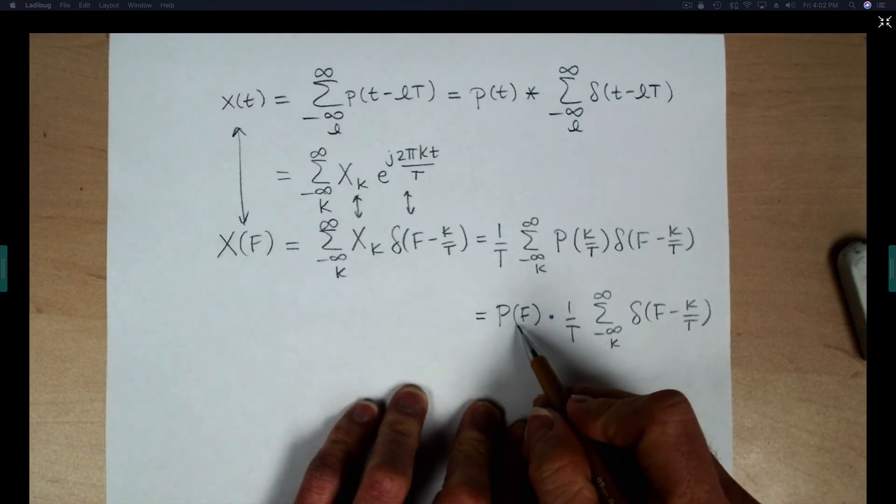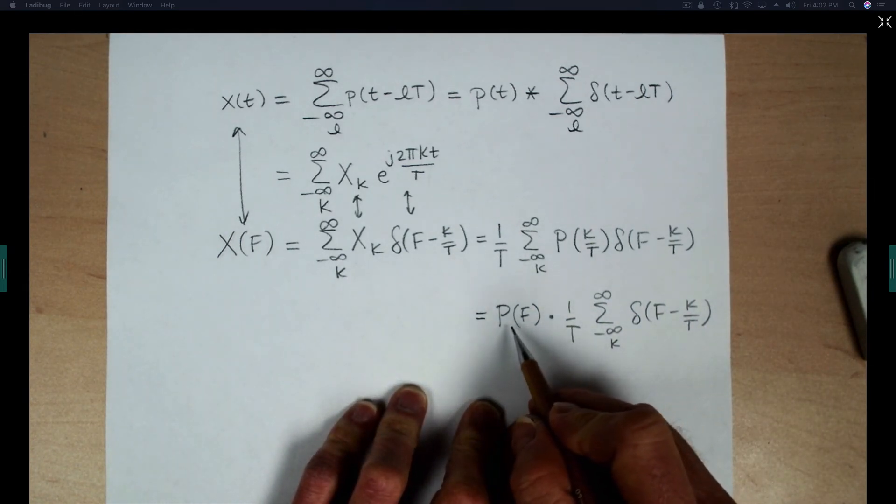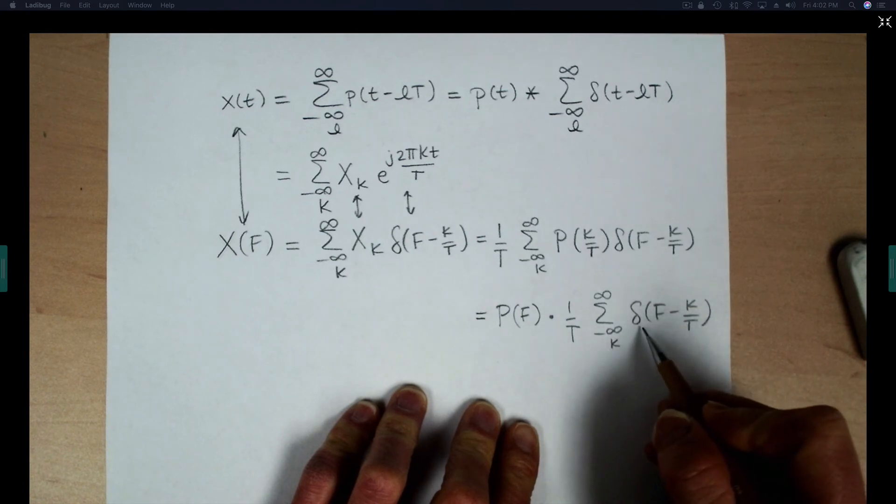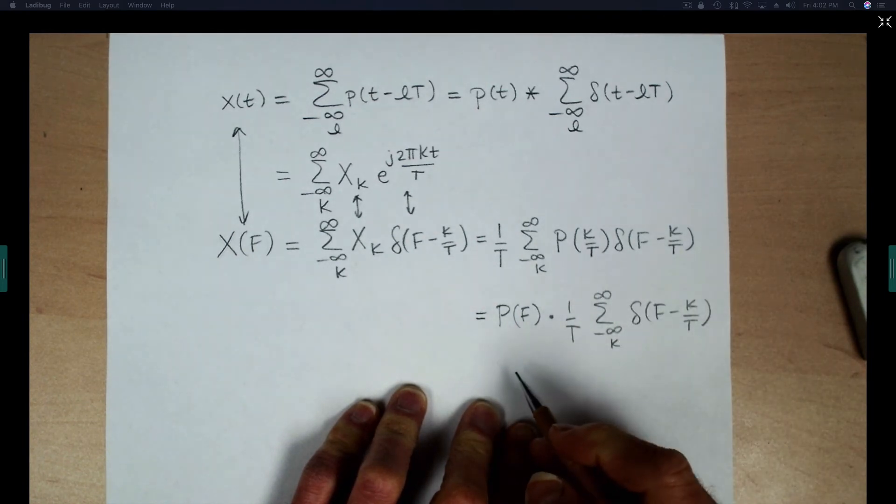If you work this in the opposite direction and multiply P of F through and then use the sifting property of the delta function, you get back to this expression.